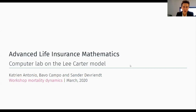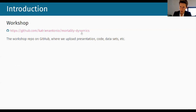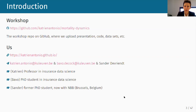We're going to do that with R. First of all, where can you find the code? As in the previous computer lab, I put everything online on my GitHub site, where you will find the repository on mortality dynamics. There you can find the lecture sheets, the code, the data sets, and everything you need for this computer lab.